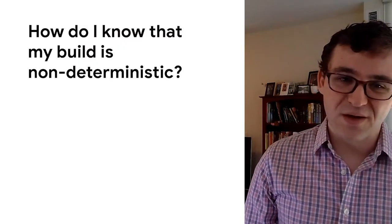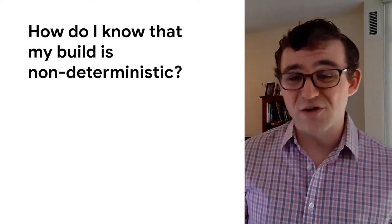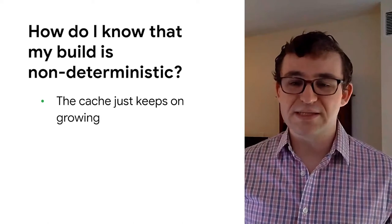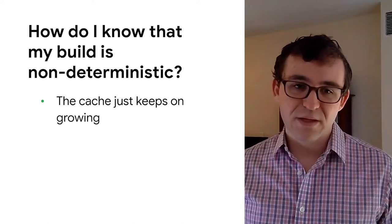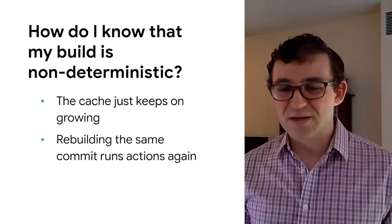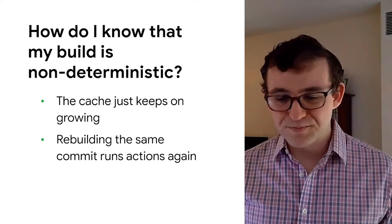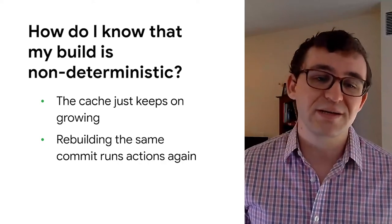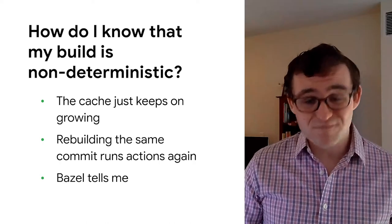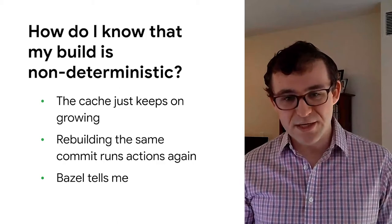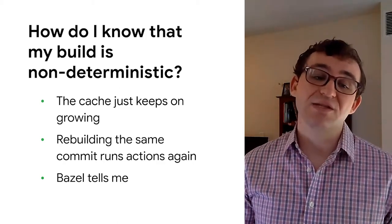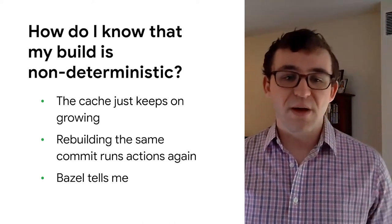We now know there are many ways to make a build non-deterministic, but knowing it's possible is different from finding out where it's happening and putting a stop to it. A couple of common symptoms point to a non-deterministic build, unsurprisingly related to caching: first, when we see a cache just keep on growing — running builds on the same commit over and over and the cache keeps growing. Similarly, rebuilding the same commit runs actions over and over even though the output should be cached. Ideally, Bazel would just tell us magically that our build is non-deterministic — it doesn't. But fear not, Bazel actually has all the tools you need to figure it out, and we're about to walk through how to stitch them together.